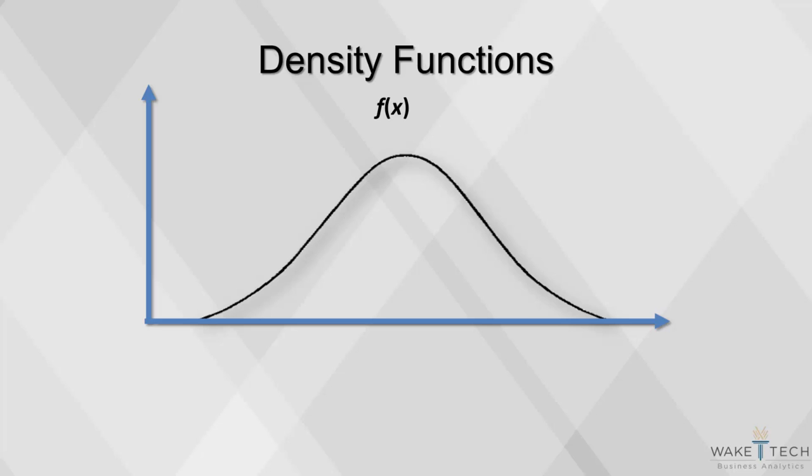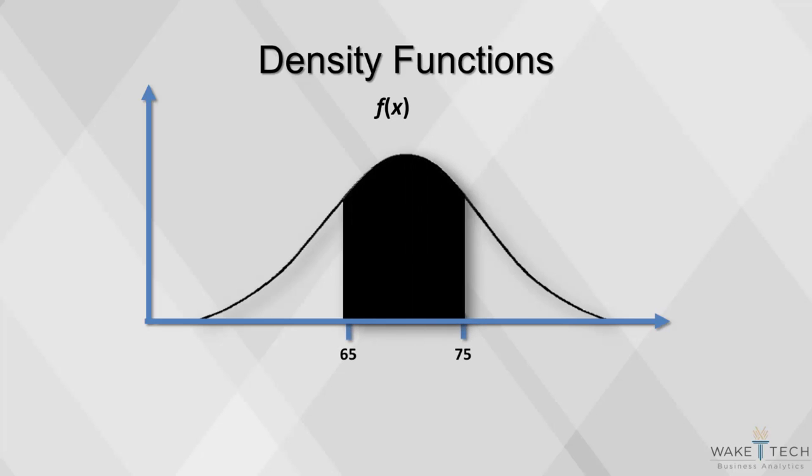The higher fx is, the more likely x is. Probabilities are found from a density function as areas under the curve. So for example, the shaded portion under this bell curve represents the probability of x being between 65 and 75.